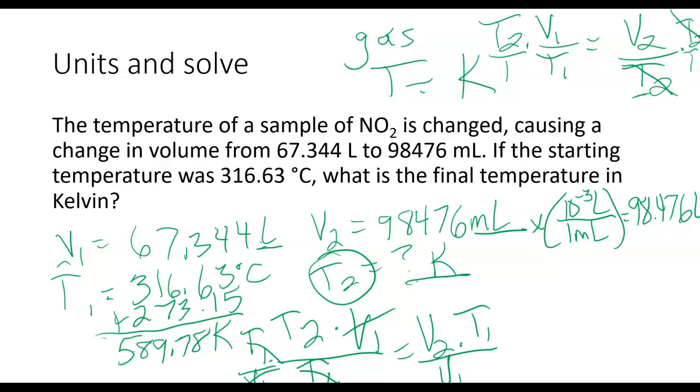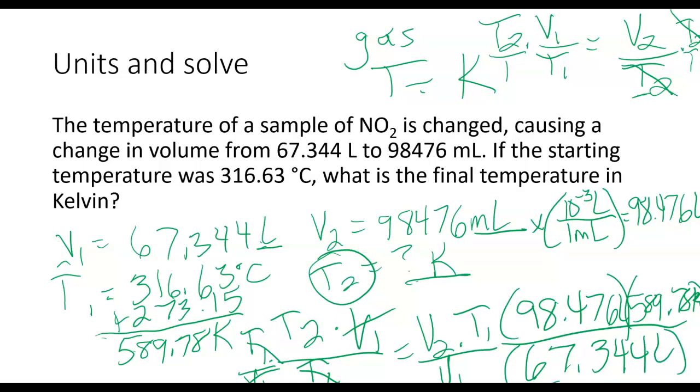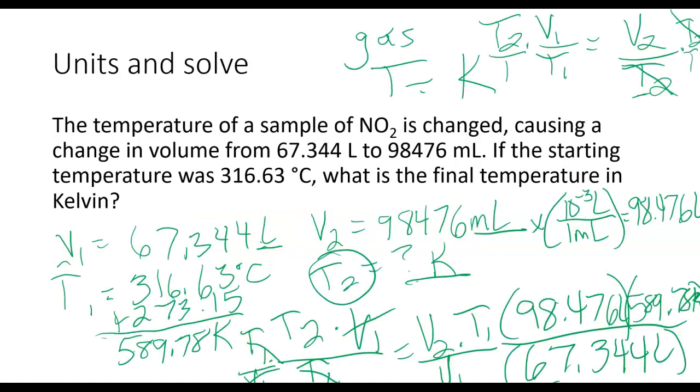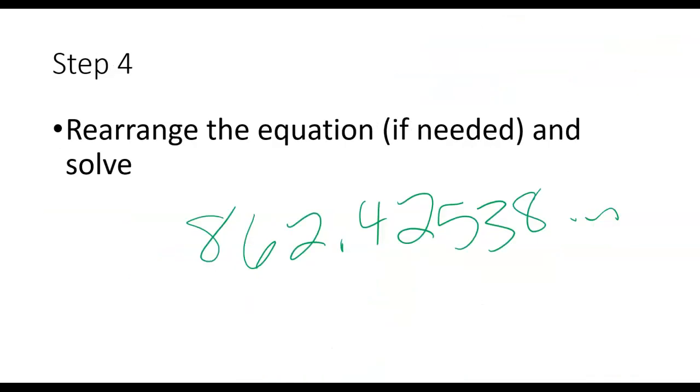Now I plug in my values. I have V2, so that's 98.476 liters. T1, 589.78 Kelvin. V1, 67.344 liters. I'll plug that into my calculator. If I plug that into my calculator, I get 862.42538 and it keeps going. My units here, liters are going to cancel out. I'm going to be left with Kelvin. That's what my problem asked for. So that's my units.